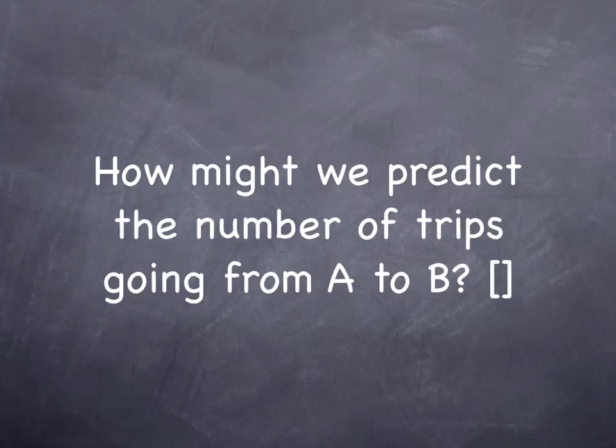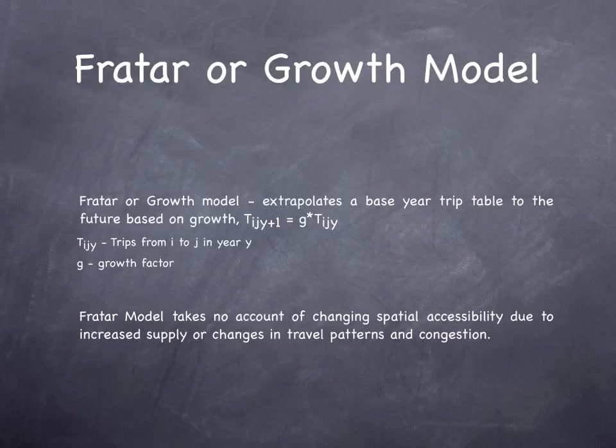With 3,000 zones, there are 3,000 squared, or 9 million OD pairs, only 3,000 of which are intrazonal. Only a very small fraction of trips — though perhaps more than one in 3,000 — will stay within their zone. We want a model to help us with this.